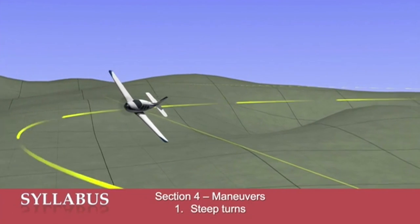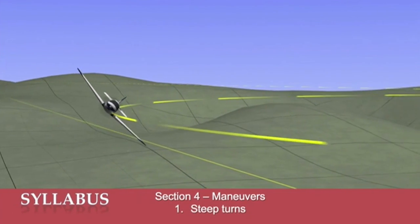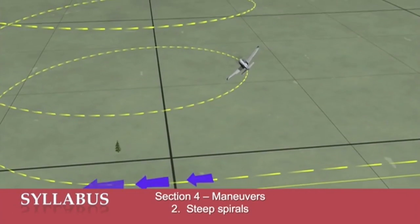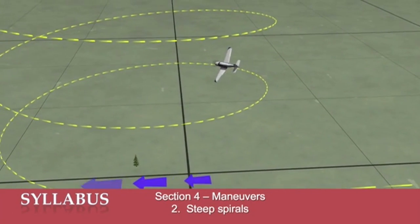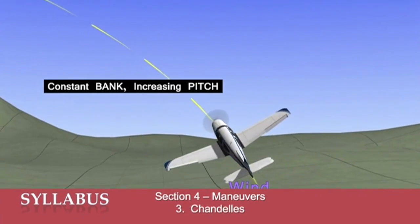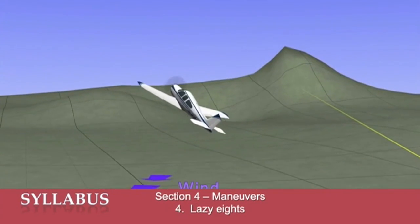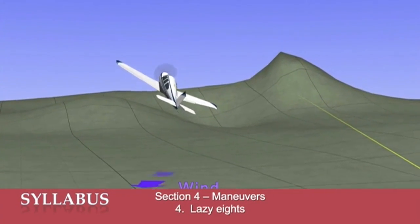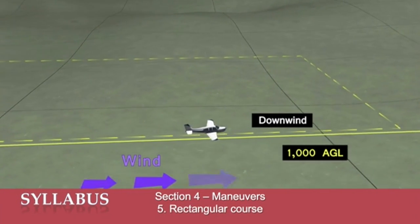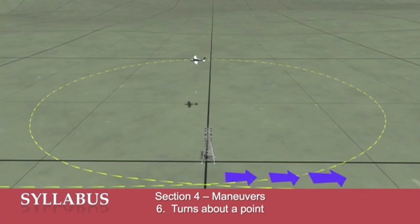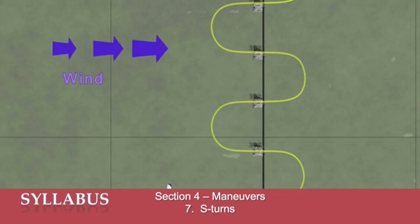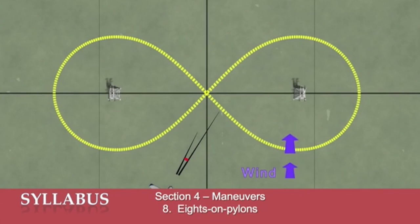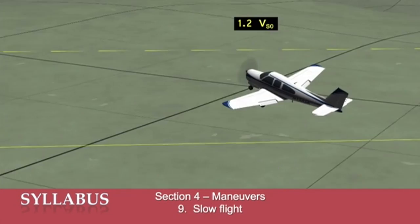In Section 4, the maneuvers, we'll examine steep turns, steep spirals, chandelles, lazy eights, the rectangular course, turns about a point, S-turns, eights on pylons, and slow flight.